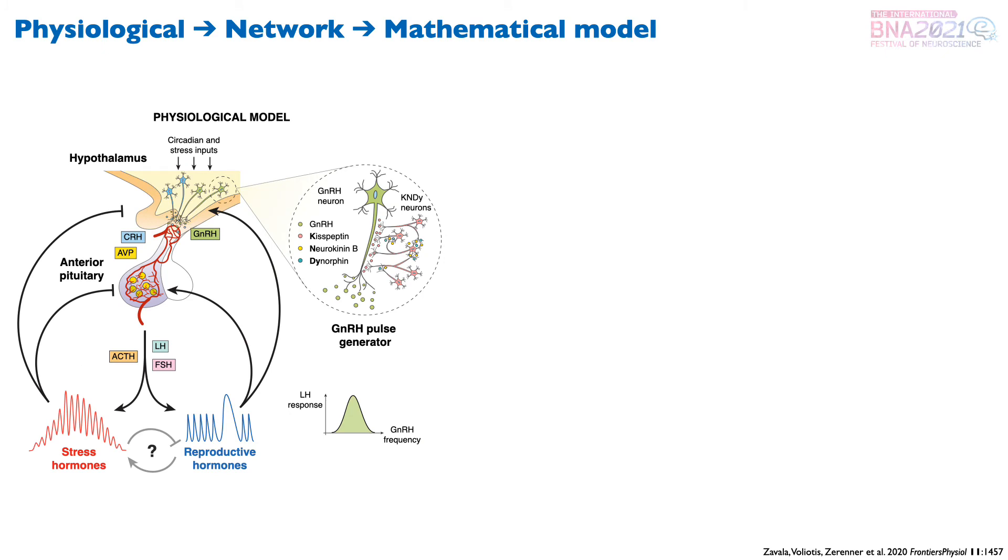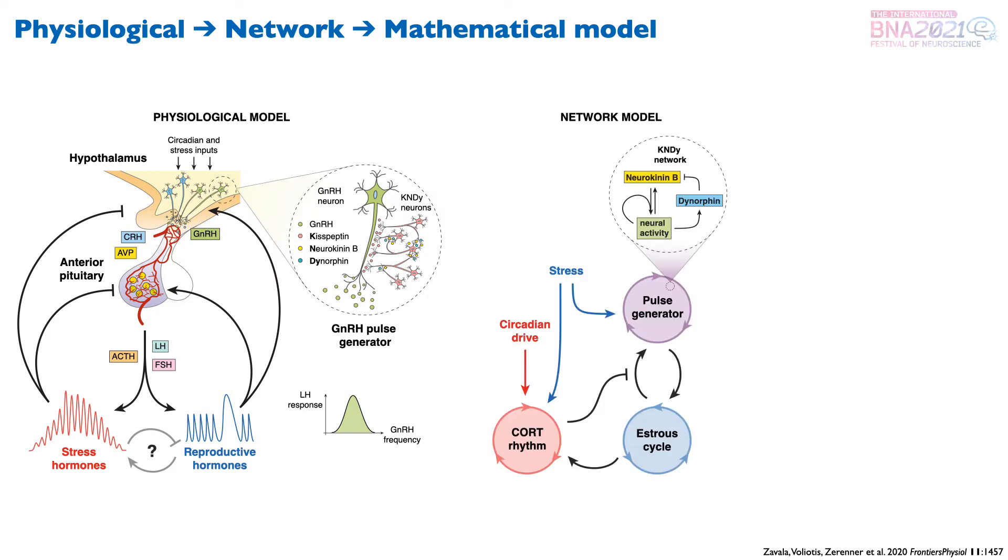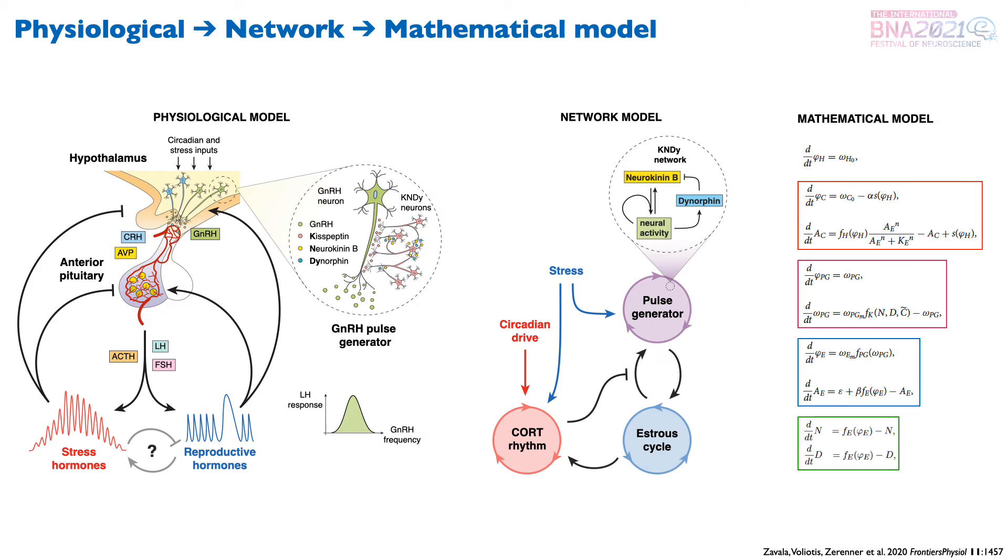To make sense of these results, we started with a physiological model of the HPA and HPG axis and translated it into a network model of coupled oscillators. These oscillators were the cortisol rhythm, the estrous cycle, and the hypothalamic pulse generator with the KNDy network at its core. We postulated coupling interactions between these oscillators based on the literature, including external forcing due to the circadian drive and stressors.